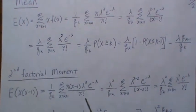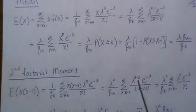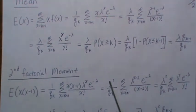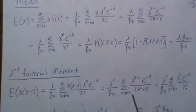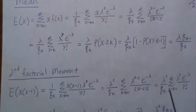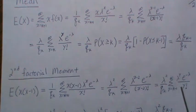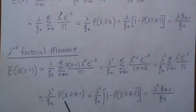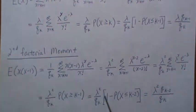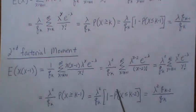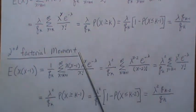The two numbers cancel with two of the factorial terms, leaving x minus 2 factorial, and we bring out lambda squared to get an x minus 2 term. With index change y = x minus 2, y goes from k minus 1 to infinity, and that's a Poisson sum equal to P(x greater than or equal to k minus 1). Taking 1 minus that gives q sub k minus 2, so this is the second factorial moment.